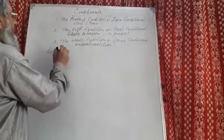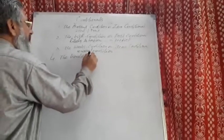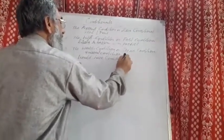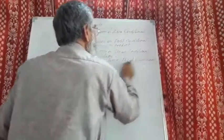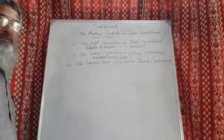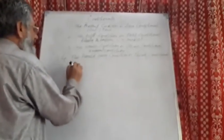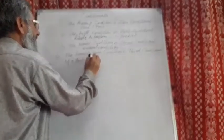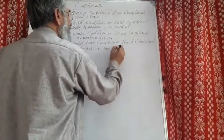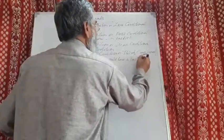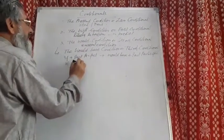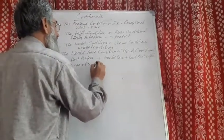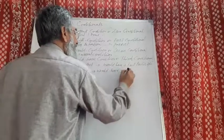So far as the fourth type is concerned, the fourth type is the would have condition, also known as the third conditional. In the would have condition or the third conditional, we have the construction: if plus past perfect, plus would have, plus past participle. That means: if plus had, plus third form of the verb, and then would have plus third form of the verb.